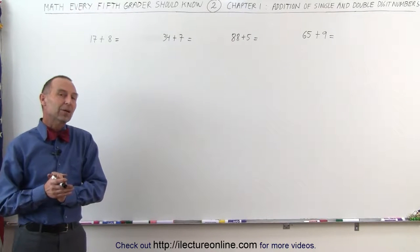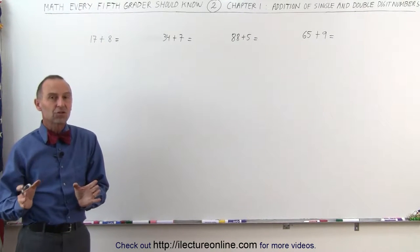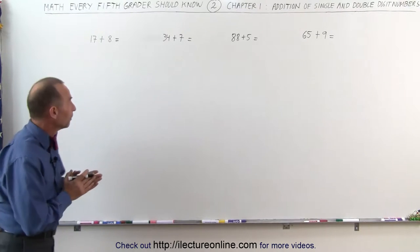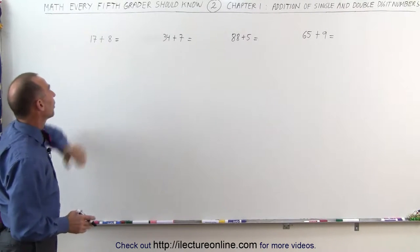Welcome to ElectronLine. Now let's take a look at how we add single-digit and double-digit numbers together. For example, 17 plus 8.